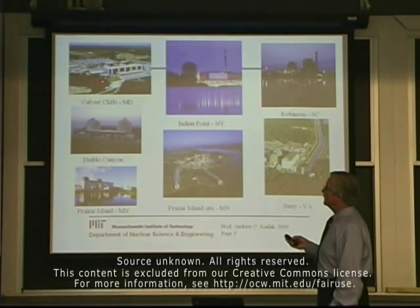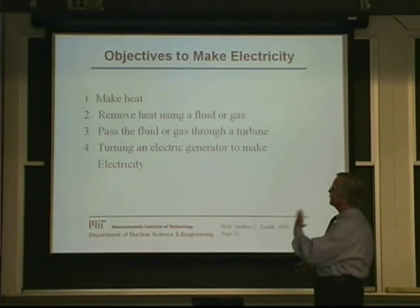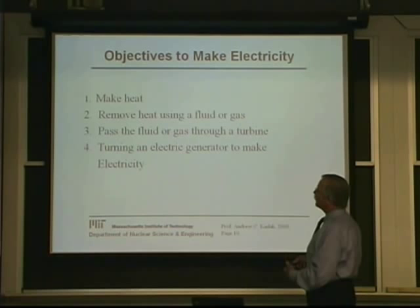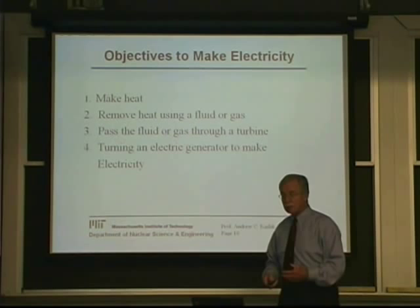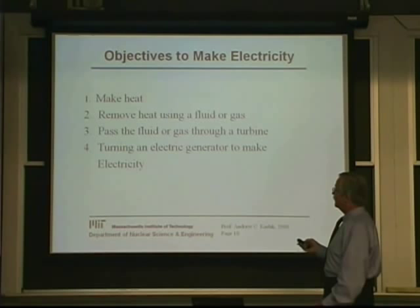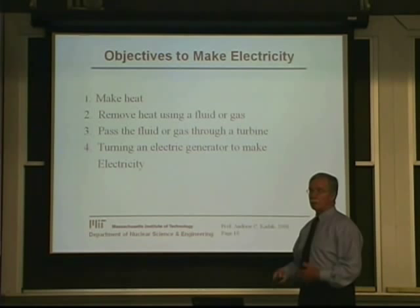One of the key objectives is obviously to make electricity from nuclear power. All the safety considerations and understanding of how these plants work is very important, but the objective is to make electricity. To do that, we have to make heat, remove the heat using some kind of fluid — whether water or gas — pass this fluid through a turbine, which turns a generator and makes electricity. We do it because we don't release any CO2, noxious gases, or dust particulates into the environment. It's essentially a clean energy source, which people are now recognizing as a really important value.